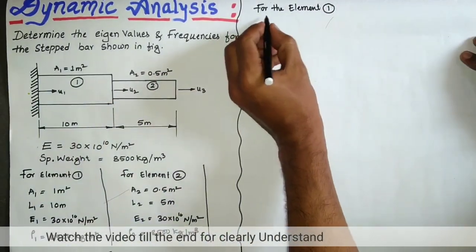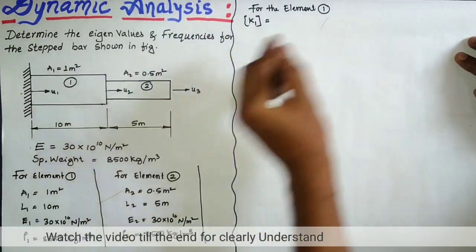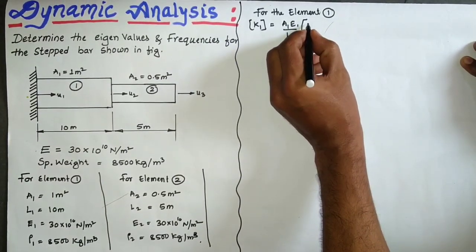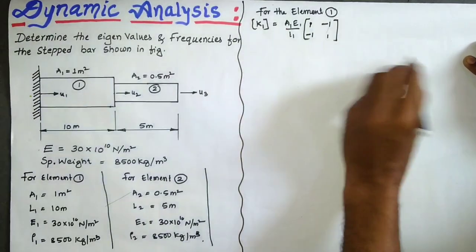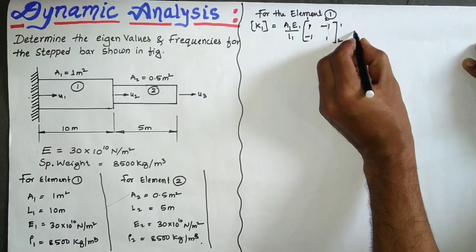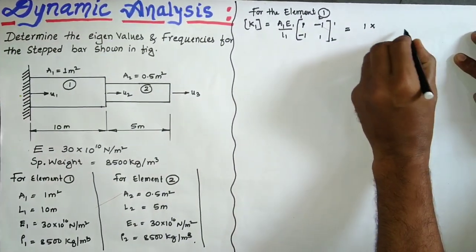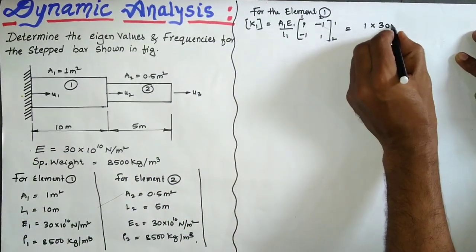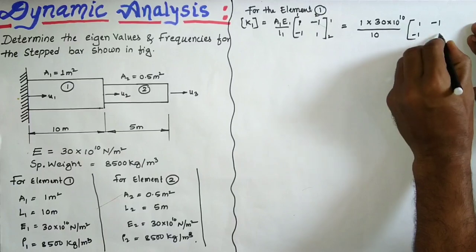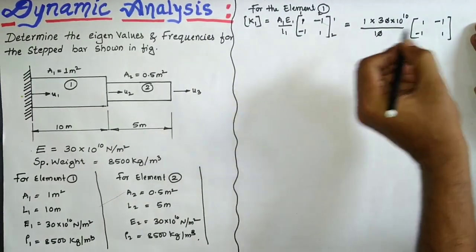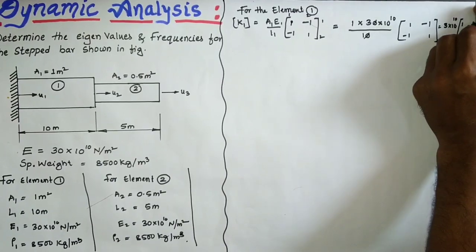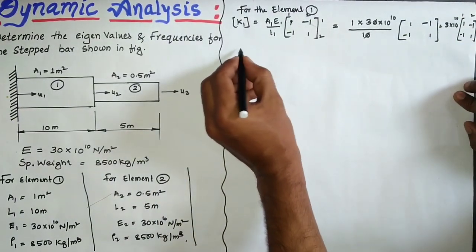For the stepped bar, the element stiffness matrix K1 = (A1·E1/L1) × [1 −1; −1 1], covering nodes 1 and 2. Substituting: A1 = 1 m², E1 = 30×10^10 N/m², L1 = 10 m, we get K1 = 3×10^10 × [1 −1; −1 1].